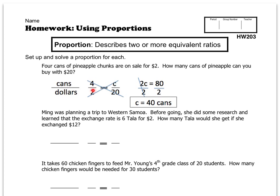They ask how many cans can we buy, so we use the variable C for cans with $20. Notice the $2 and $20 are on the bottom with dollars, and the cans — four and our unknown amount C — are on the top. If we cross multiply, we get 2 times C equals 4 times 20, which is 2C = 80.